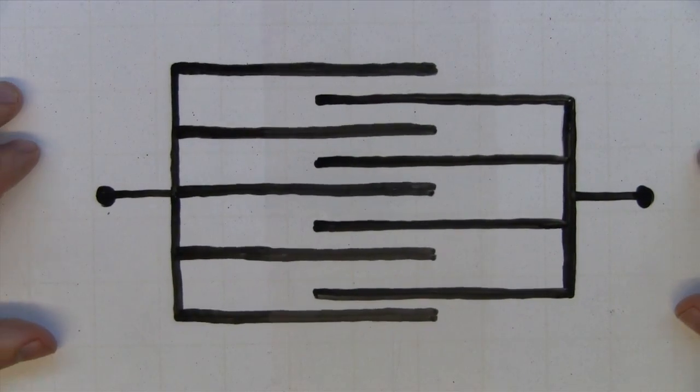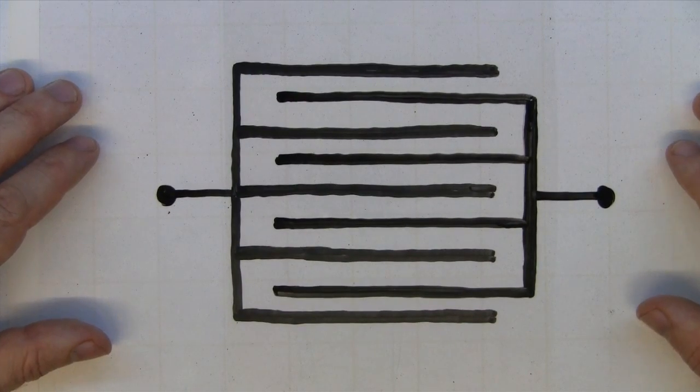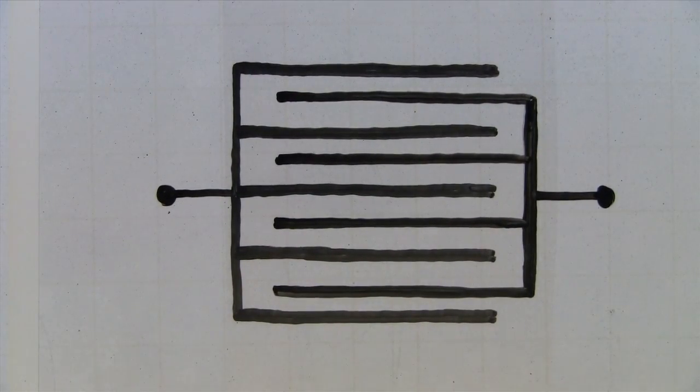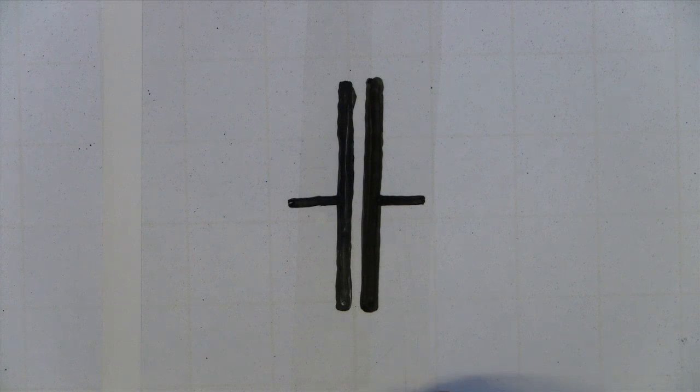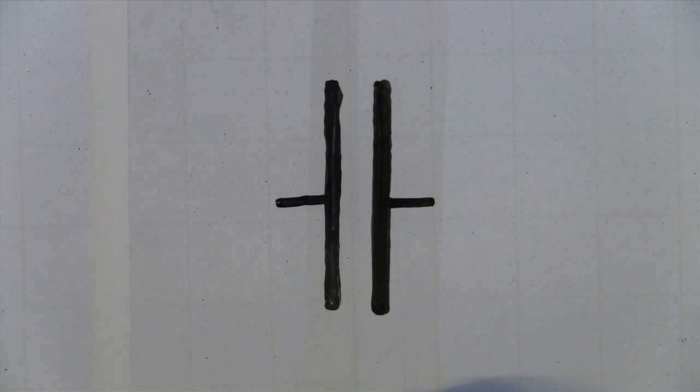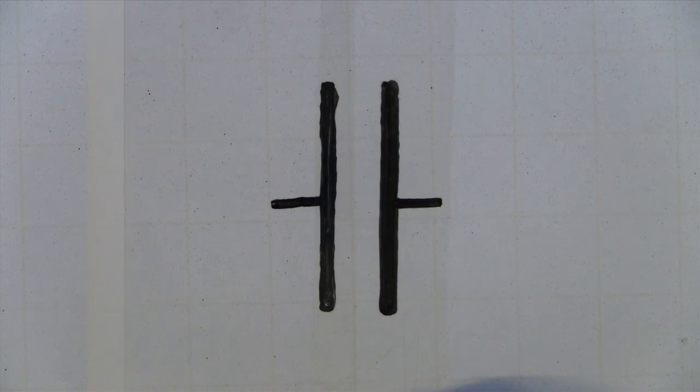As the plates move together, the area is increased between the plates. Capacitance is inversely proportional to the separation between the conducting plates. The further away the plates, the lower the capacitance.